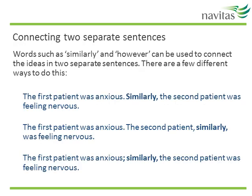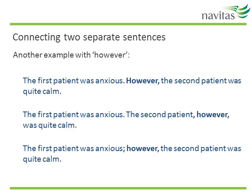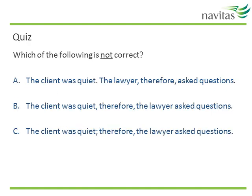You may also want to show a relationship between two separate sentences — in other words, you may not want to join them together into one sentence, but you want them to flow logically. Words such as 'similarly' and 'however' can be used to connect ideas in two separate sentences. Take a look at the examples on the slide. The third option is a little less common, so if you're not confident using that option you can stick with the first two. Sentence B is not correct because the two sentences should be separated by a full stop or a semicolon, not just a comma.